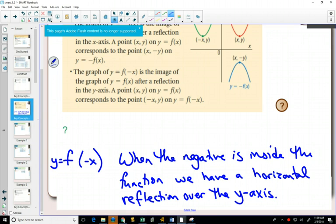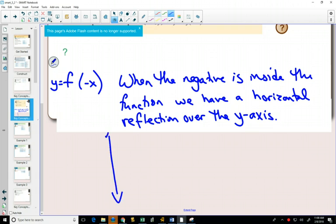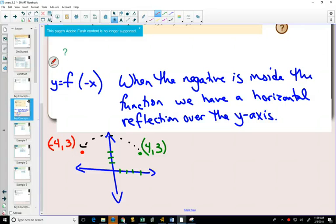So just like before, things inside the function affect our graph horizontally, they are going to affect the x-coordinate. So if we look at just a single point, let's say I had the point (4, 3). If I reflect it horizontally over the y-axis, I'm going to get a new point. And the coordinates of this new point are going to be (-4, 3). And what has happened is our x value has changed, and our x value has been multiplied by a negative 1.